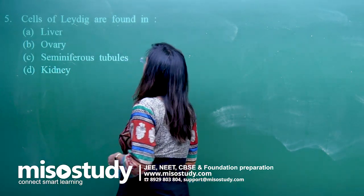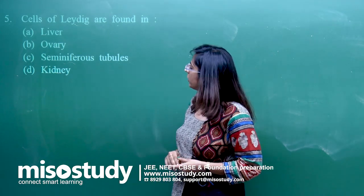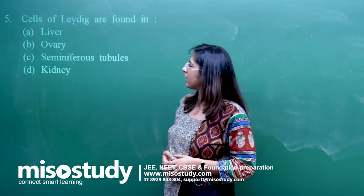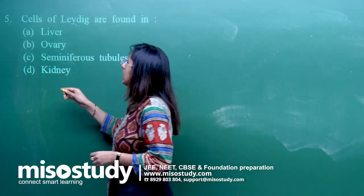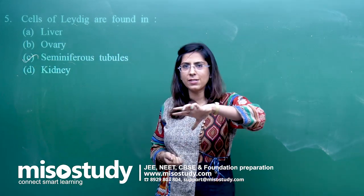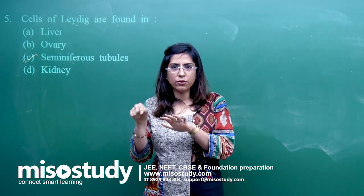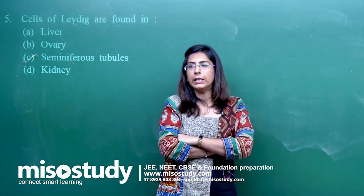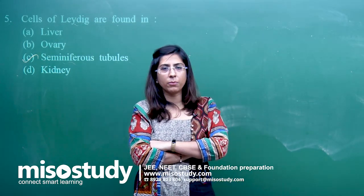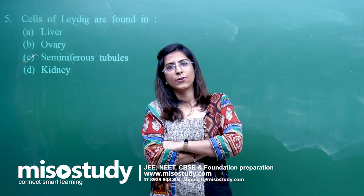Question 5: cells of Leydig are found in — liver, ovary, kidney, or seminiferous tubule? The correct answer is seminiferous tubule. Leydig cells are interstitial cells present in the testis, specifically in the seminiferous tubules. Their main function is to form androgens — specifically testosterone — which gives secondary sexual characteristics.